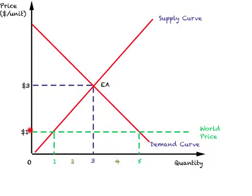Now when the country engages in foreign trade and the same product is being sold in the world market for $1 compared to $3, this becomes the world price and the relevant price for this country. At this price, this country will supply a certain amount to the domestic market, demand will be five units, and since demand is greater than supply, this country will start importing four units of this product. In the previous video I showed that total surplus under free trade is greater than under autarky.